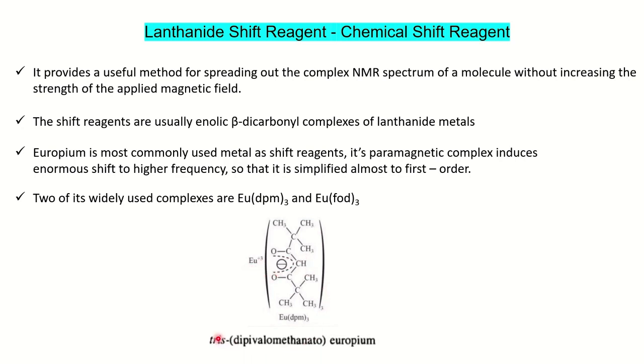The full form of Eu(DPM)₃ is dipivaloylmethano europium, because you have three molecules of this ligand. MSc students should learn the structure to draw in exam questions if this comes at length — normally they ask you to write a short note. The other complex is Eu(FOD)₃, where F is for fluoro, O for octane, and D for dione. You select the longest chain, which has eight carbons, and there are seven fluorines, giving heptafluoro — so the full name is heptafluorodimethyloctanedionate europium complex. This is the structure of the FOD europium complex.